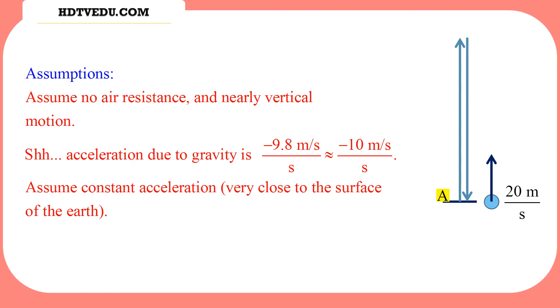So what are the assumptions? You have no air resistance and nearly vertical motion. Acceleration due to gravity is negative 9.8 meters per second per second. Why negative? Because acceleration due to gravity is always pointing down. We chose positive Y as vertically up, so acceleration due to gravity will be negative 9.8 meters per second per second. For this collection of problems, let's make it negative 10 meters per second per second. It's much easier to follow everything with the number 10.